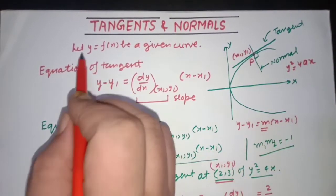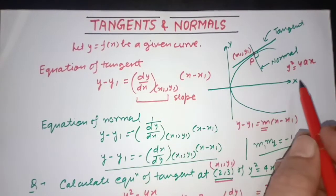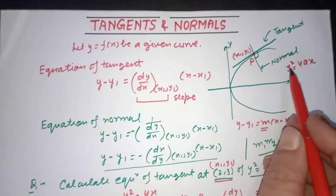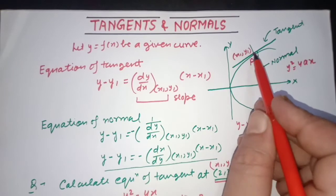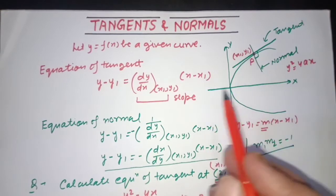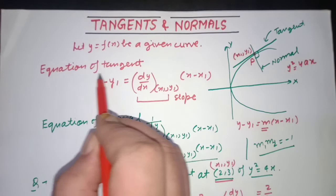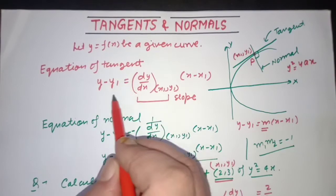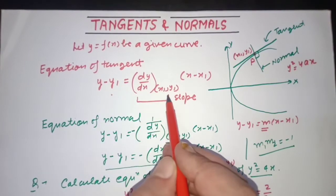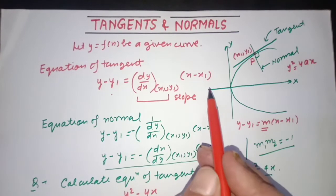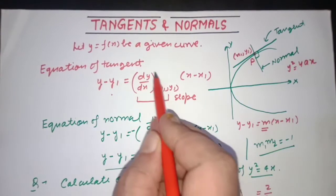Suppose y = f(x) is the curve equation given, and the point of contact is given. To calculate the equation of tangent, we use the formula: y − y1 = (dy/dx) at (x1, y1) × (x − x1). Here dy/dx is the slope of the tangent.